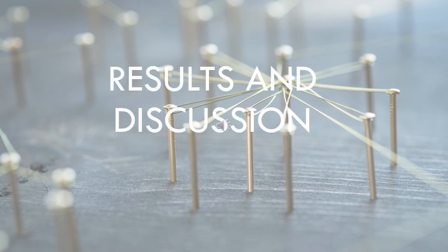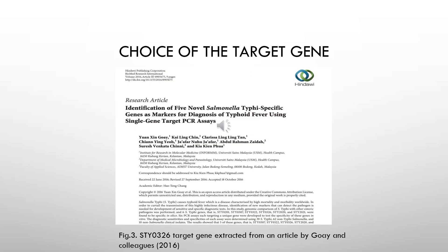Coming to our results and discussions: to make the right choice of genes to target, we used this article by Goye and colleagues, where they quantified five novel Salmonella-specific genes that could be used as markers for diagnosis. We took one of those genes — one of the shortest ones — called STY0326, and that is the gene we decided to use to develop on the nucleic acid platform.